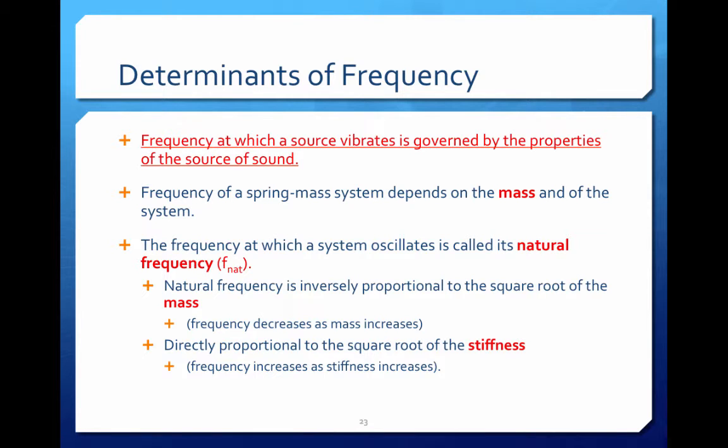So what determines the frequency? The frequency at which the source vibrates is governed by the properties of the sound source. The frequency depends on the mass of the system. Every system has something called its natural frequency, or its frequency that it likes to vibrate best at. The frequency decreases as the mass increases. So a more massive object will have a lower frequency than a less massive object.